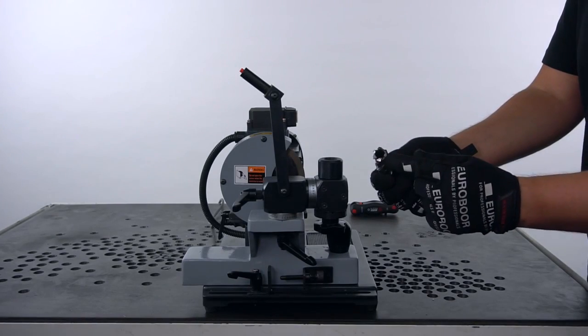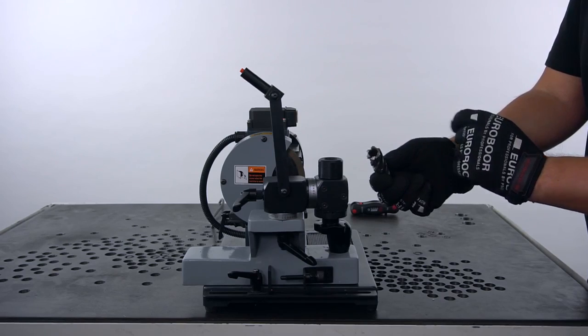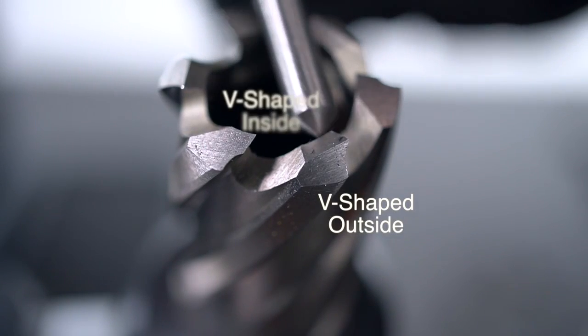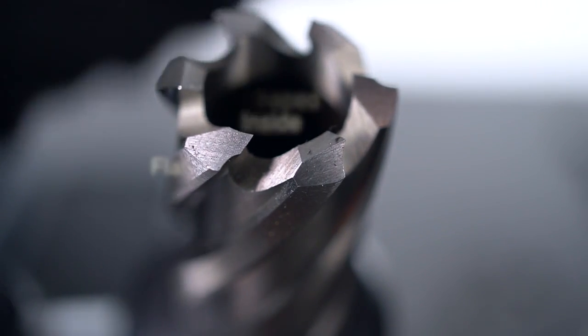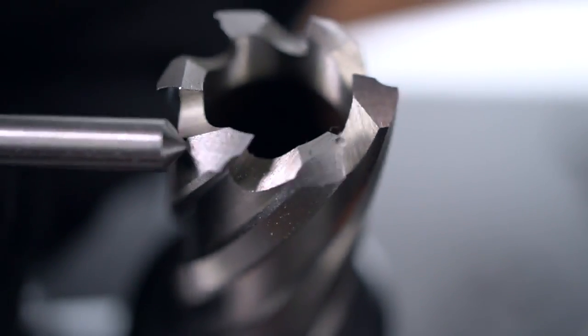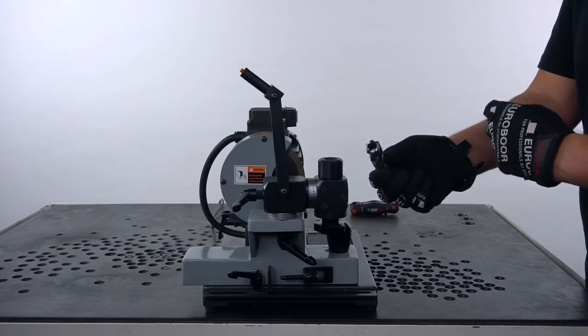The Eurobore cutter that we're going to resharpen has two kinds of teeth: V-shaped with the outside and the inside, and flat teeth. So we'll have to do three different grinding actions.